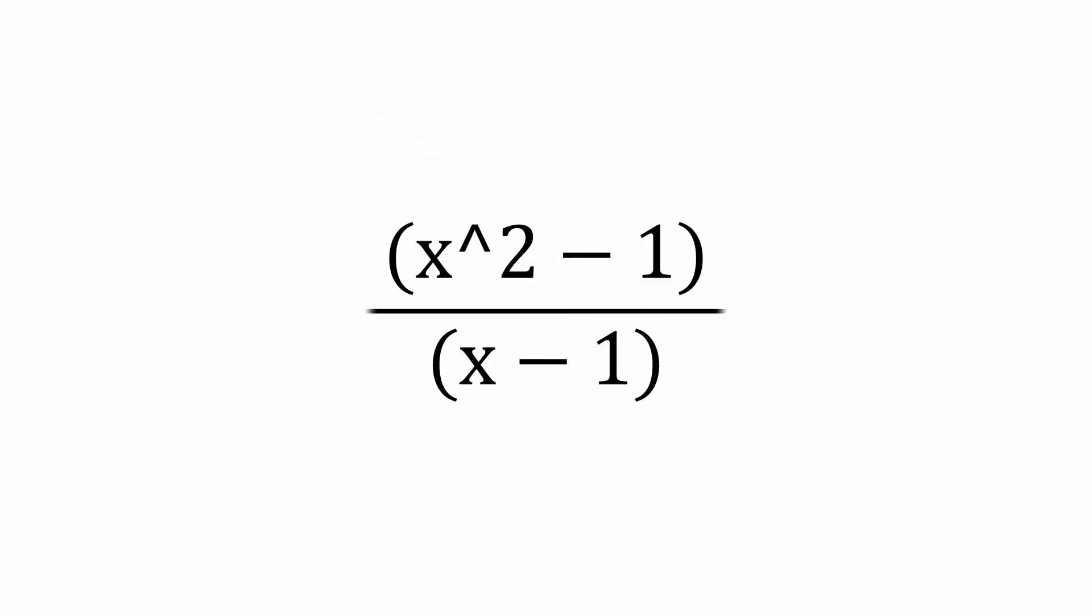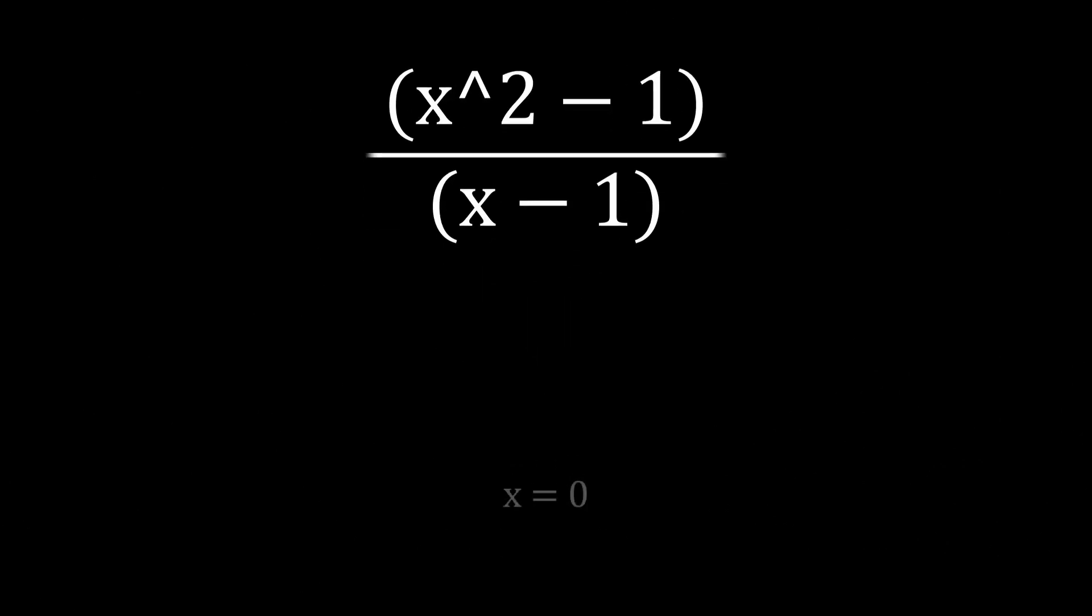Let's take the expression x squared minus 1 divided by x minus 1. x is defined for every value except for x equals 1, because of a division by 0 error. We can see what it wants to be, though.